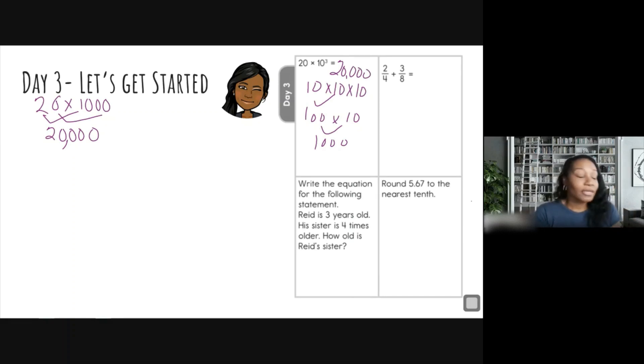Wow, we have another fraction problem, just like yesterday, only this one is addition. So you're going to follow the same steps, only we're going to add after we rename those fractions. So let's write it out. I like to do four square to organize my thinking. So I have two fourths plus three eighths. Let's go ahead and draw our four square. All right, so looking at the denominators, again, I have four and I have eight. So let's write those out.